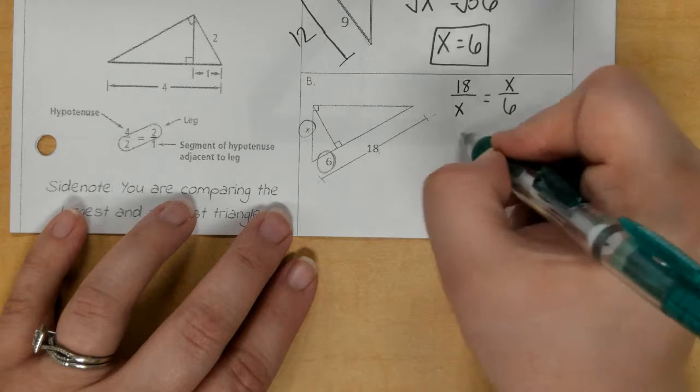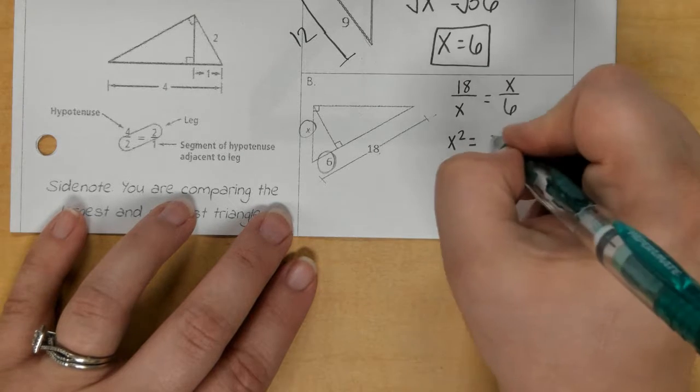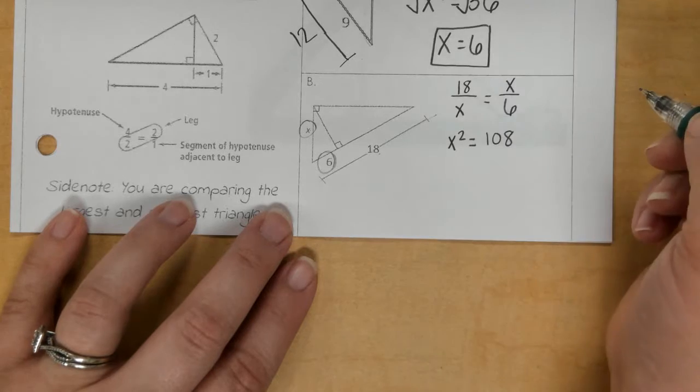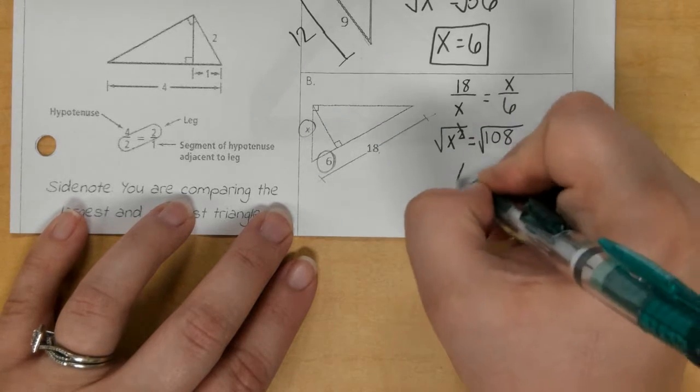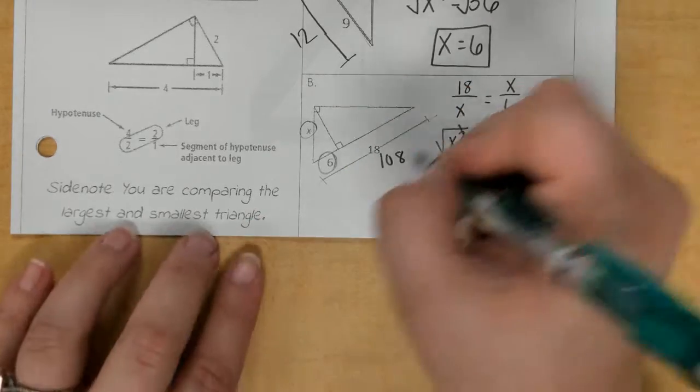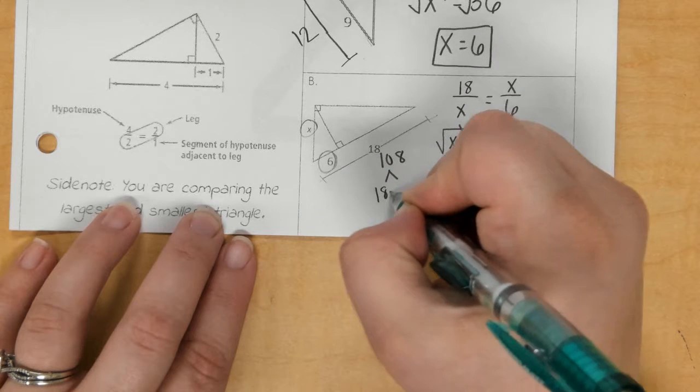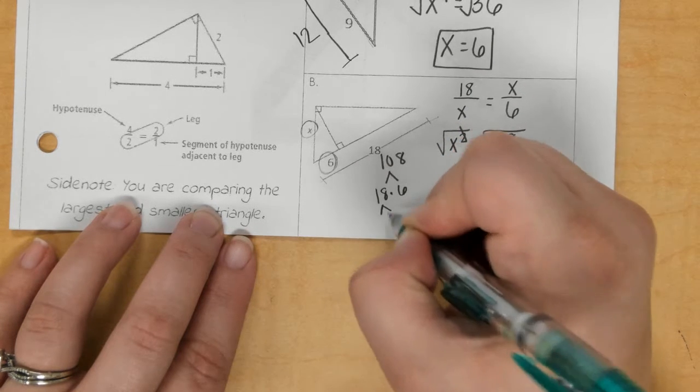So, x times x is x squared. 18 times 6 is 108. If I square root of both sides, and break down 108, and I'm just going to use that 18 and 6. Well, 6 and 18, however you want to break it down.